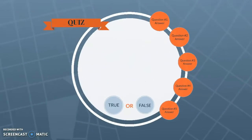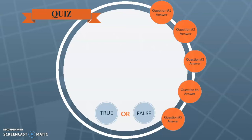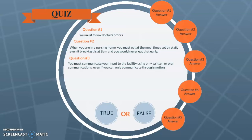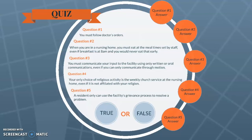It's quiz time. Answer true or false to each of the following statements and write down which resident's right pertains to the statement. Number one: you must follow doctor's orders. Number two: when you are in a nursing home, you must eat at the mealtime set by staff, even if breakfast is at 8 a.m. and you would never eat that early. Number three: you must communicate your input using only written or oral communications, even if you can only communicate through motion. Number four: your only choice of religious activity is the weekly church service at the nursing home, even if it is not affiliated with your religion. Number five: a resident can only use the facility's grievance process to resolve a problem.